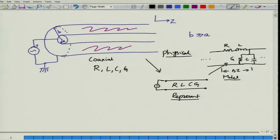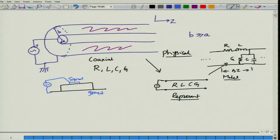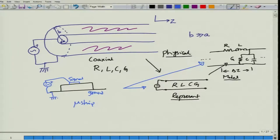If you replace a coaxial cable with a microstrip line, the ground plane and signal layer are connected similarly. Regardless of whether you consider a coaxial cable or a microstrip line, the representation is the same: two pairs of lines representing the two-conductor transmission line — one for ground, one for signal. The values of R, L, G, C will be different, but the circuit picture of R, L, G, C remains the same.